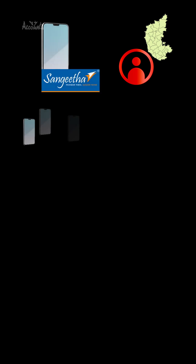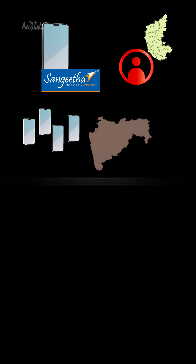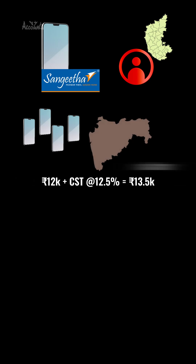Let's say, being a consumer in Karnataka, you had bought a mobile phone from Sangeeta Mobiles, who in turn had bought this — of course in bulk — from a dealer in Maharashtra for 12K plus CST, and Sangeeta usually sells at a profit margin of 25%.